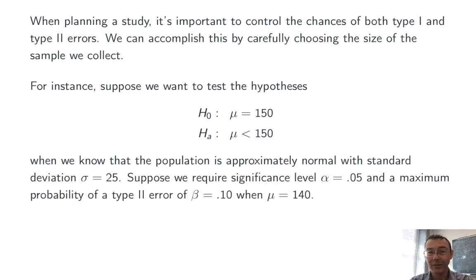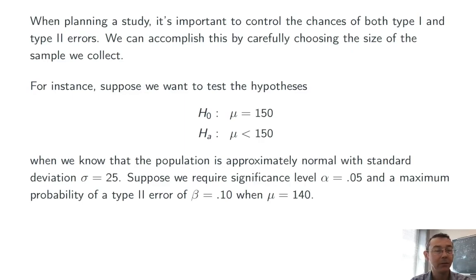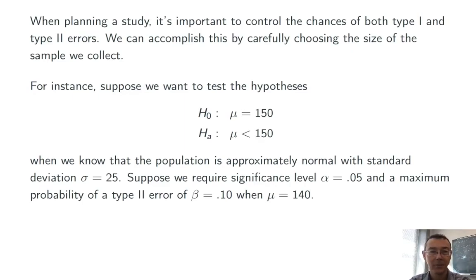So in planning this study, we're going to have a sort of acceptable probability of type 1 error and acceptable probability of a type 2 error. So let's set those things at alpha equals 0.05, the significance level of the test, the permissible probability of a type 1 error, and a beta of 0.10. That's the maximum permissible probability of a type 2 error when the true population mean is 140.